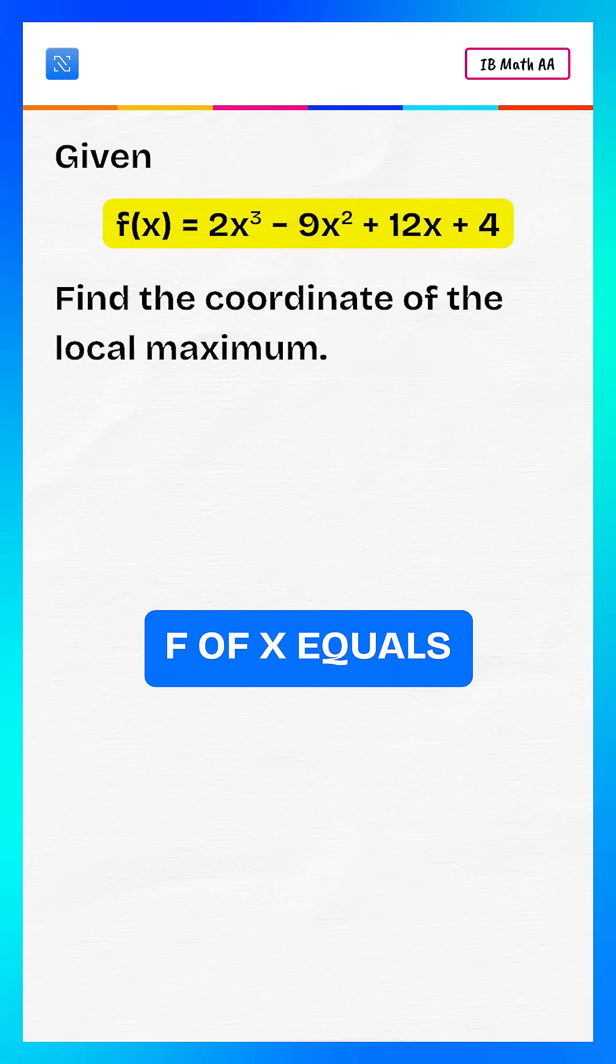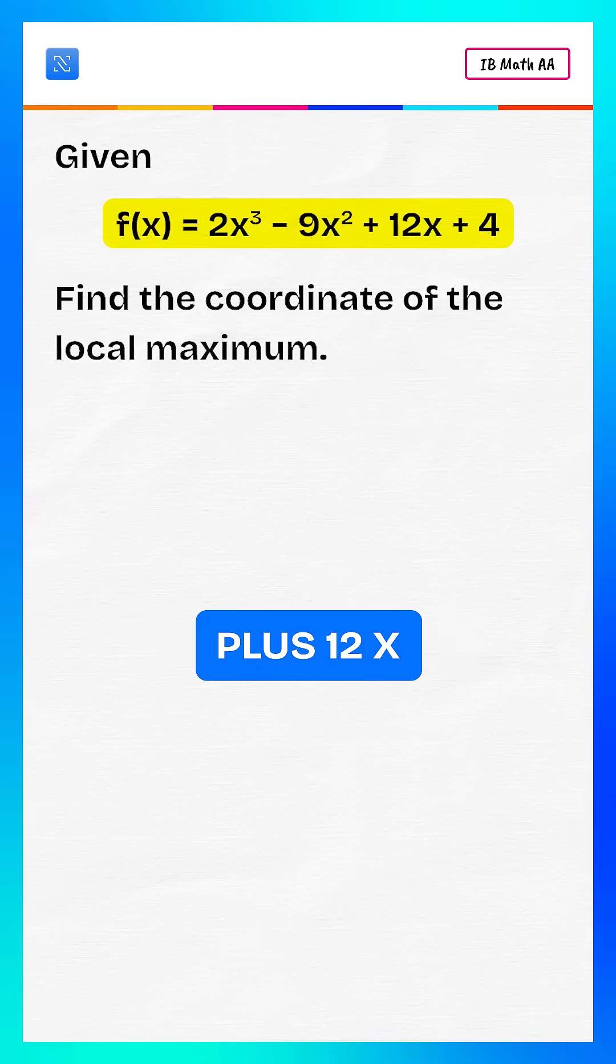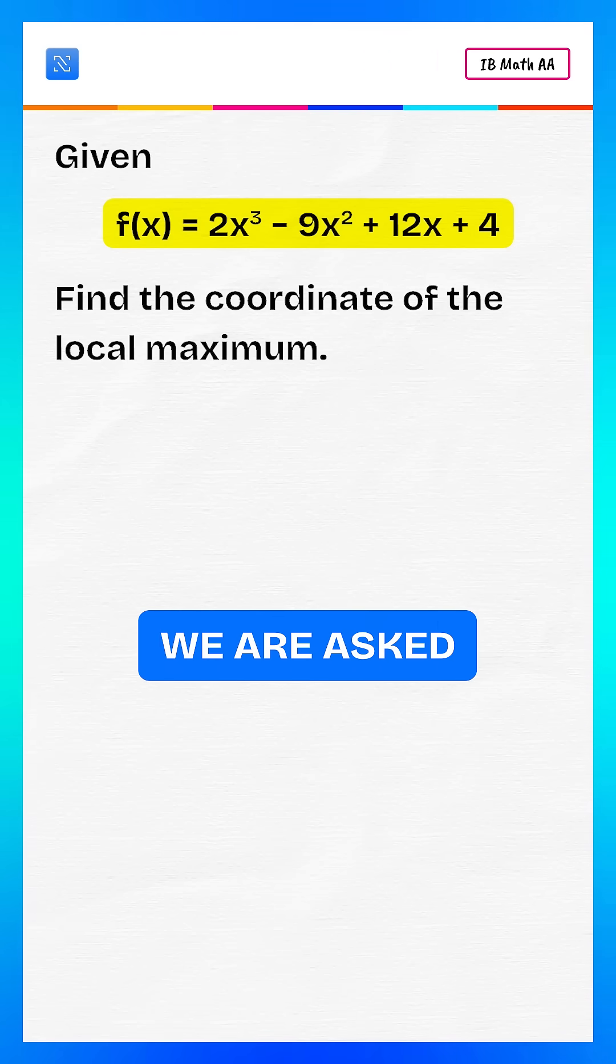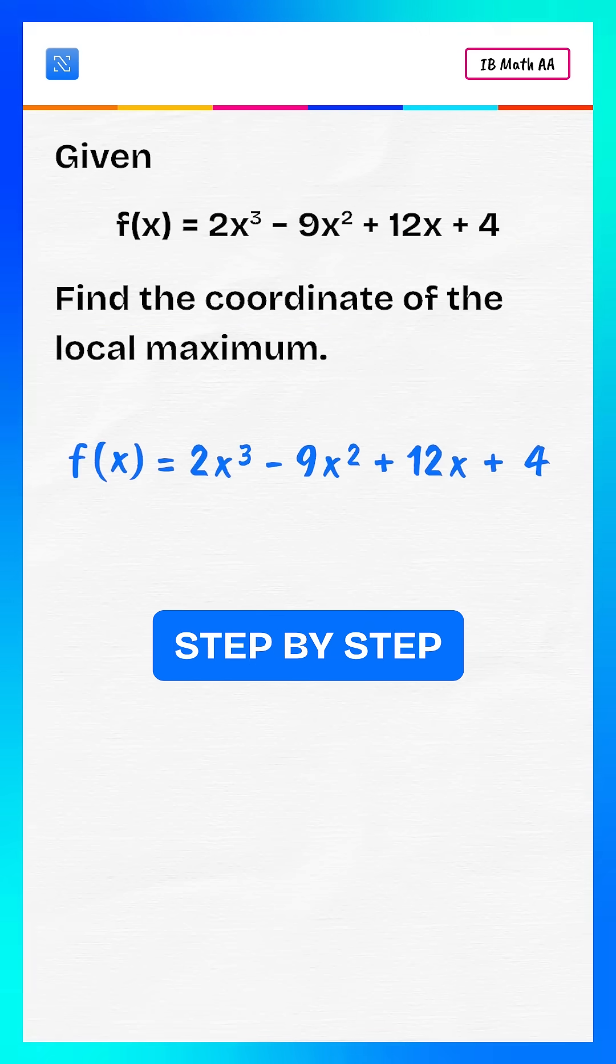We are given the function f of x equals 2x³ minus 9x² plus 12x plus 4. We are asked to find the coordinate of the local maximum. Let's solve step by step.